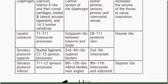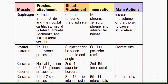Levator costarum muscles: proximal attachment includes T7 to T11 transverse processes; distal attachment is the subjacent ribs between the tubercle and angles; innervation includes C8 to T11 posterior rami; they elevate the ribs. Serratus posterior superior muscles also elevate the ribs; proximal attachment includes the nuchal ligament and C7–T3 spinous processes; distal attachment includes the second to fourth rib superior borders; innervation includes the second to fifth intercostal nerves.